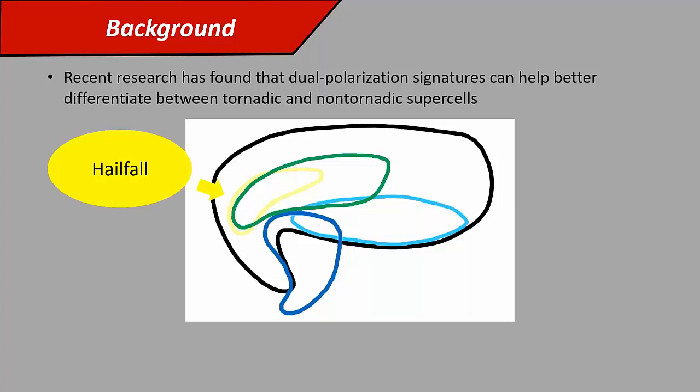There's inferred hailfall area. These are areas where you've got ZDR that's fairly low, usually below 1 dB, and reflectivity that's fairly high. That means you've got a lot of spherical scatterers that are fairly large, usually an area dominated by hail. Previous work has found that this hailfall area tends to be larger in non-tornadic supercells than tornadic supercells.